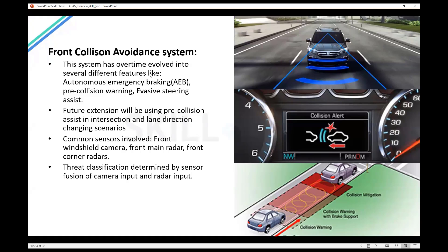Typically the front collision avoidance system has three different features: first is the pre-collision warning, then comes autonomous emergency braking, and third is evasive steering assist. Different OEMs have different production names for these features, and there is a good chance that not all features are present in all vehicles because they are expensive and currently only available in most higher trim levels, but the complete system typically has these three features.